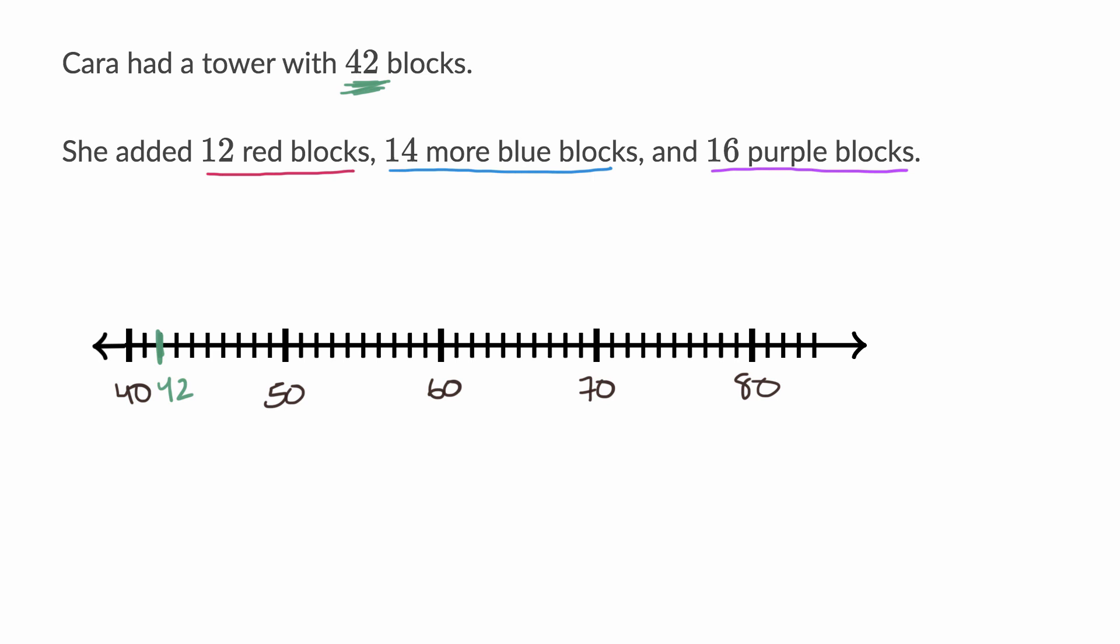Now, first she adds 12 red blocks. So you could just count on the number line. If you add one, two, three, four, five, six, seven, eight, nine, ten, eleven, twelve, you get right over there. So this right over here is all of us adding 12 blocks. Now, where does that get us to? Well, we can see that we are now one, two, three, four past 50. So we are now at 54.